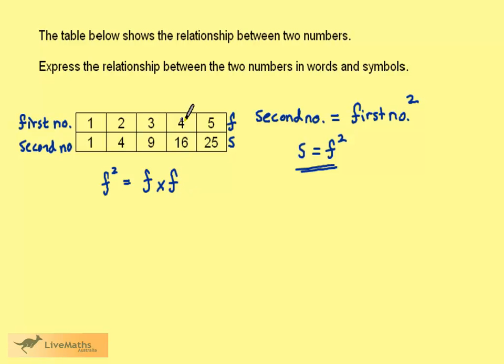We could check this out with a value. If F is 4, 4 times 4 we know is 16. And we can see from the table that this is the correct value for the second number.